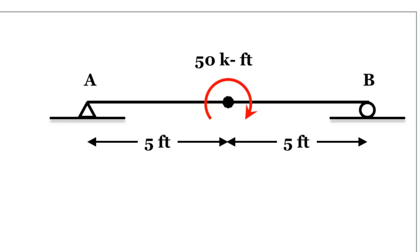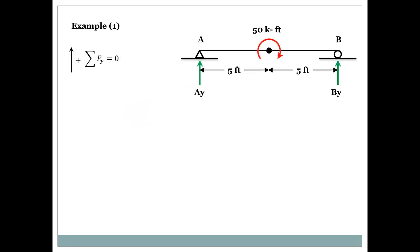How do we solve this beam? We follow the same steps: the summation of the forces in X should equal zero, the summation of the forces in Y should equal zero, and the summation of the moments about a point along the beam should equal zero. First, let's assume the direction of the reactions — Ay upward and By upward. Summing forces in Y gives Ay plus By equals zero.